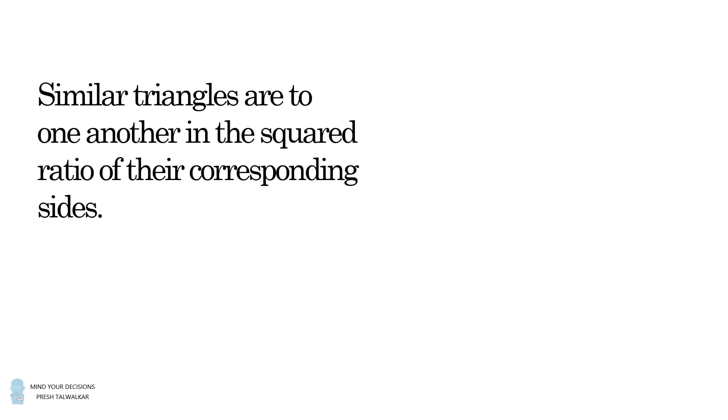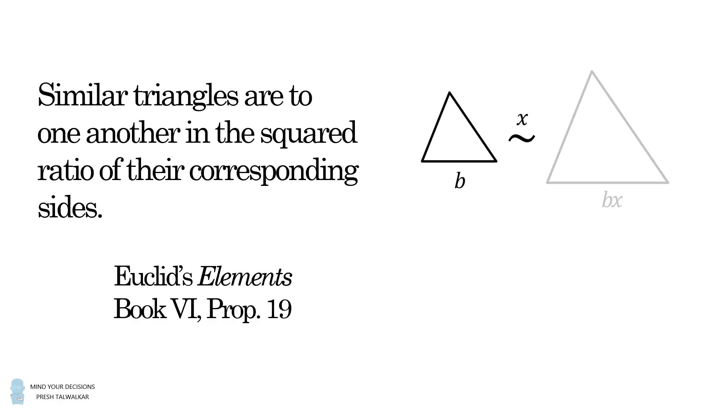As Euclid said, similar triangles are to one another in the squared ratio of their corresponding sides. If two triangles are similar in sides by a ratio of x, then the areas of these triangles will have a ratio that's equal to x squared.